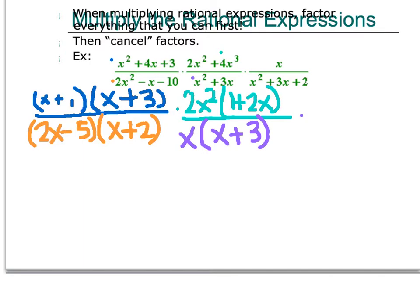And then I move to my last rational expression. The x in the numerator, you can't do anything with that, so I just write it down. And the denominator will factor into x plus 1, and x plus 2. So, now that we have everything factored, that's when we can cancel our factors.